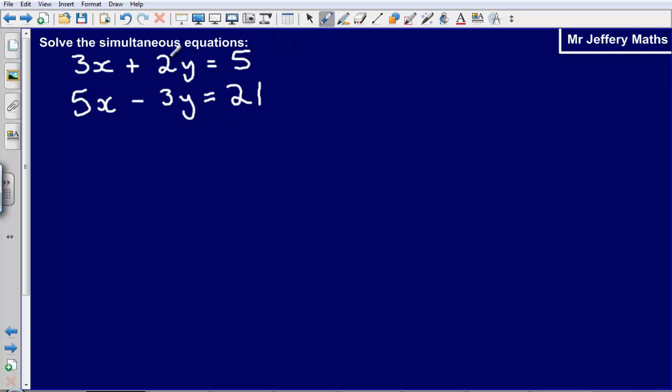So the way in which we do this is we need to multiply each of the equations by a number that will end up making either the x's the same or the y's the same.